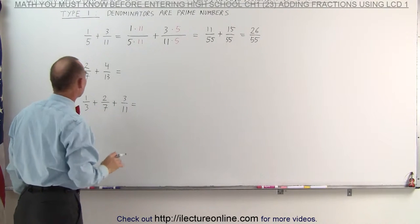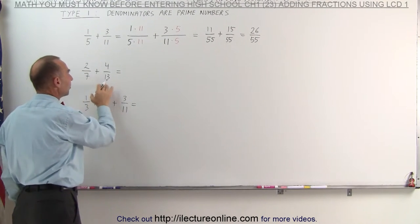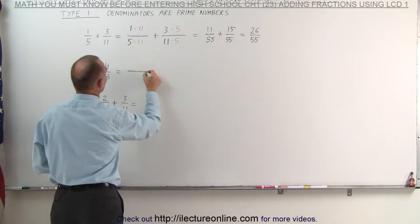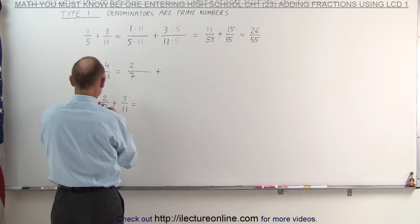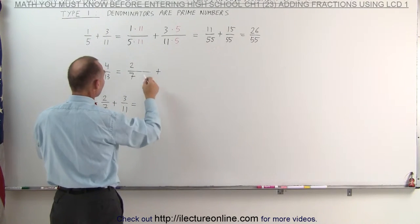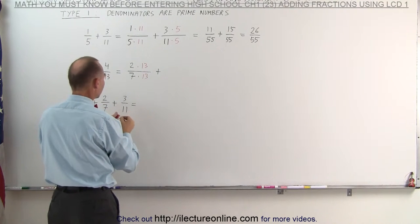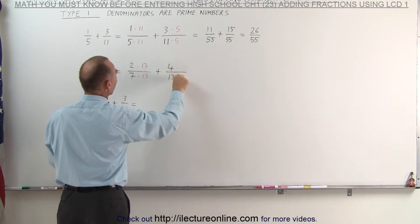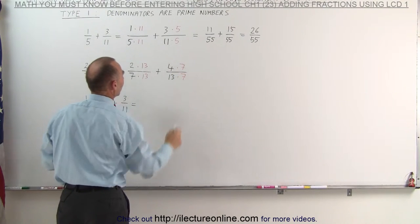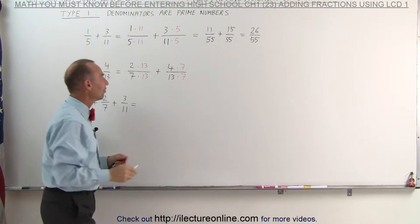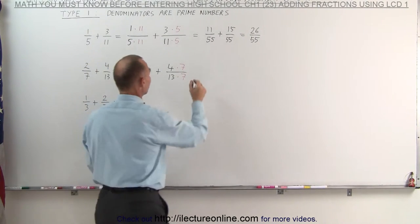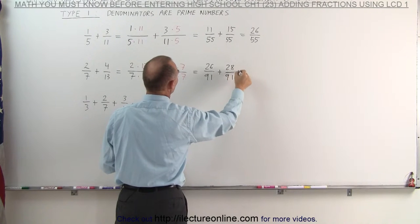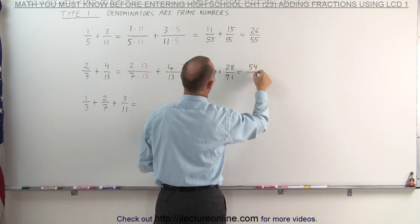On our second exercise, we can see again that the denominators are prime numbers, which means the lowest common denominator is simply the product of the two denominators. We're going to take the first fraction and multiply both the numerator and the denominator times 13. On the second fraction, 4 divided by 13, we're going to multiply both the numerator and the denominator by 7. Notice both denominators are now equal: 7 times 13 is 91. The two fractions can be written as 26 over 91 plus 28 over 91. When we add these together, we get 54 over 91.